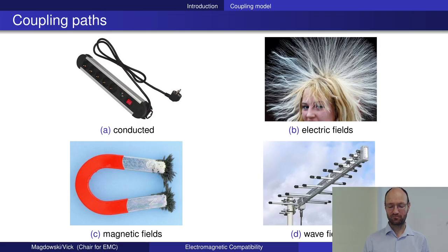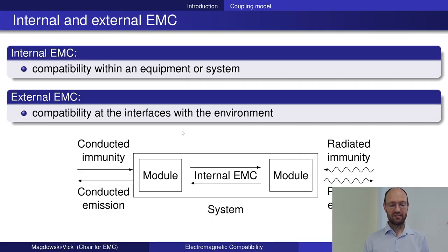There can be internal EMC and external EMC. Internal EMC is when you have a larger system like an electric vehicle, and for example the onboard charger would disturb your radio receiver. External EMC is when you have your electric vehicle, you pass by a radio transmitter station, and the radio transmitter station disturbs your electric vehicle.